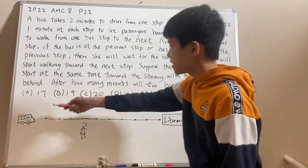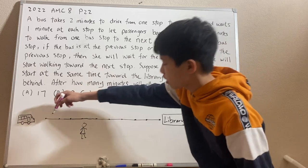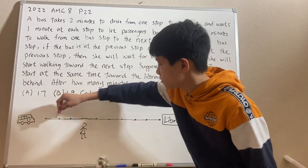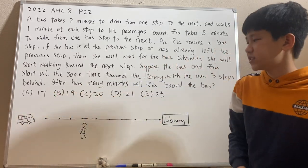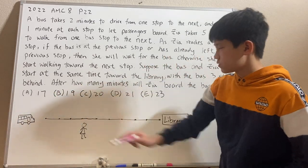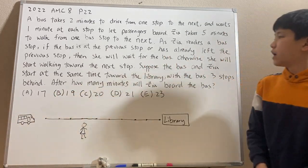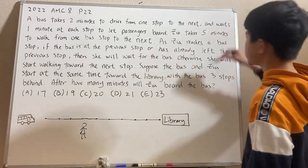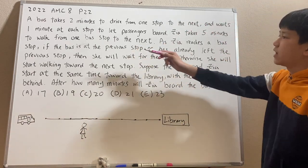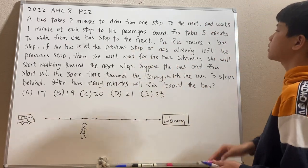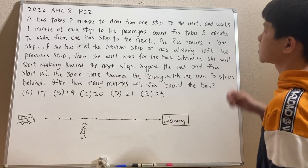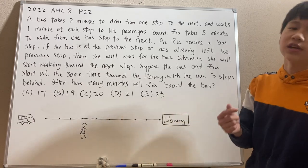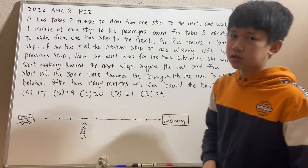As you can see in the diagram, the bus is three stops — one, two, three — behind Zia, so Zia is right here. The only condition the problem gives us is: as Zia reaches a stop, if the bus is at the previous stop or has already left the previous stop, then only will she wait for the bus.